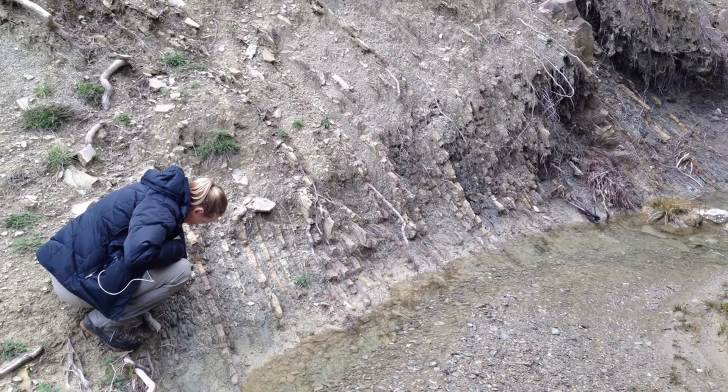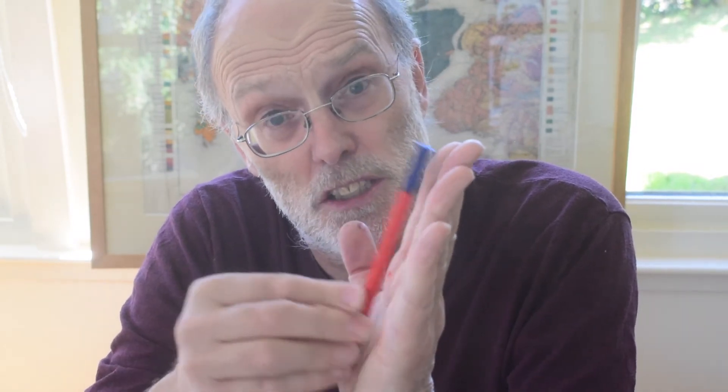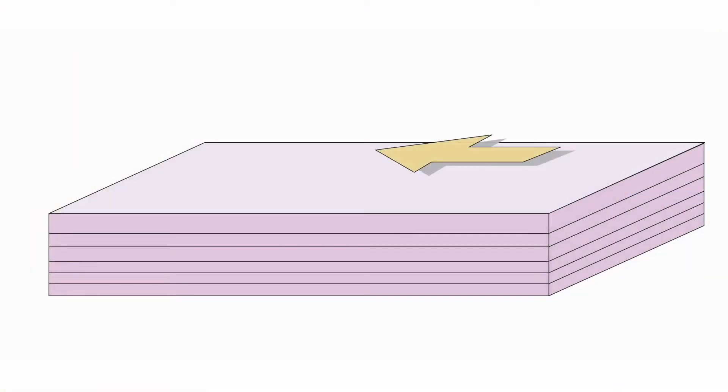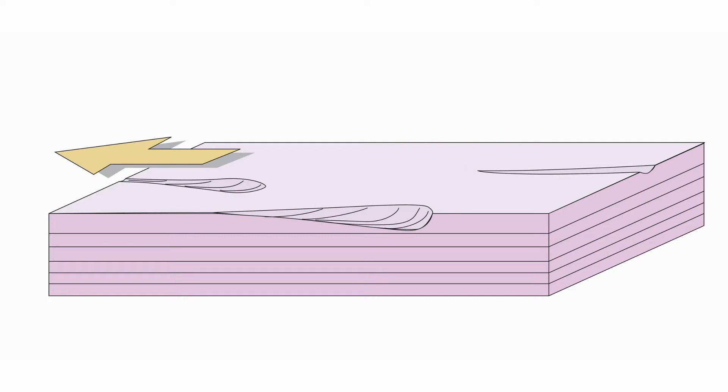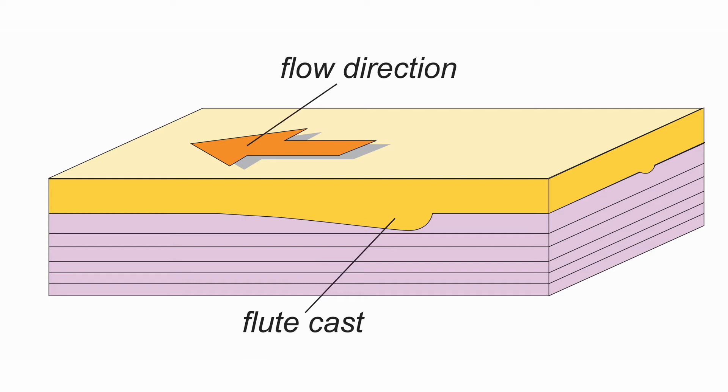Now let's go to another example where we can make further observations. This example shows some very steeply dipping turbidite sandstones — thin but with really spectacular flute casts on their undersides. We're seeing them in an overturned state so we can see these features on their original bases. Flute casts are great for determining paleocurrent direction because the turbidity current scours down and opens up downstream, so flutes are deeper at the upstream end. We can therefore use them as a directional indicator, not just an axis indicator.